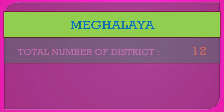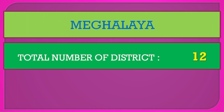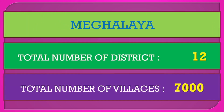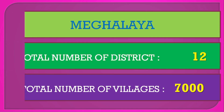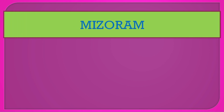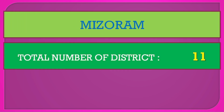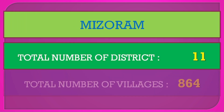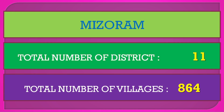Meghalaya: total number of districts 12, total number of villages 7,000. Mizoram: total number of districts 11, total number of villages 864.